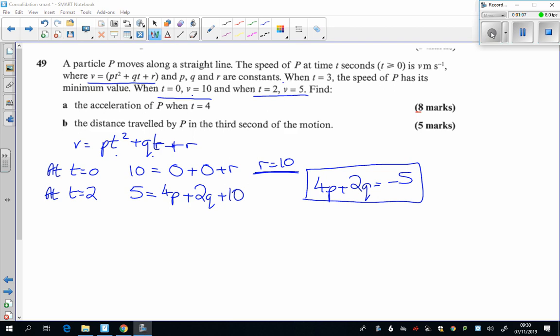Now the second part comes from the other piece of information. When t is 3, the P is at its minimum value. Well minimums, you'll remember, are when you differentiate it and it equals 0. So at t equals 3, the derivative is going to equal 0.